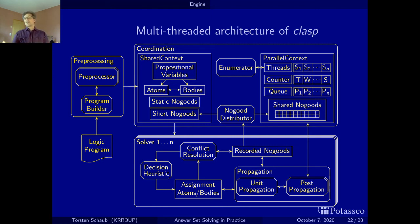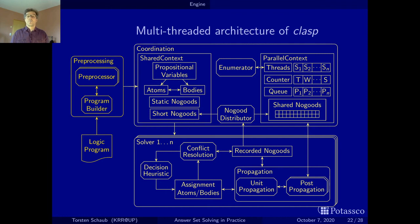Let's stop here on the architecture. I have to say this work owes so much to having brilliant people in the group. The design and implementation of Clasp are due to Benjamin Kaufmann, who actually received the best European dissertation award for this work a couple of years back. Just to honor his work — let's go on to the next section. Bye.